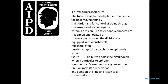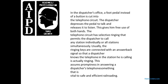The train dispatcher telephone circuit is used to control train movement, connecting the dispatcher to towers and station agents within the division. Telephones connected to the circuit are located at strategic points along the division, equipped with a push-to-talk, release-to-listen feature. A typical dispatcher telephone is shown in Figure 3-1. The button holds the circuit open with a particular telephone when not in use.